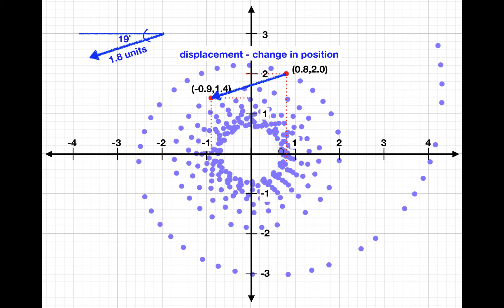And a quantity like this with both magnitude and direction is called a vector. Displacement is the first example we have seen of a vector, but it isn't the last. We'll see many more vector quantities going forward.